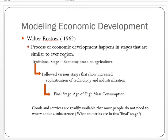In the 1960s, Rostow developed a model of economic development that is written and talked about quite frequently. He proposed that economic development happens in predictable, regular stages that are similar everywhere in the world. A country or region starts in a traditional stage where the economy is based on agriculture and subsistence, then moves through various stages of increasing technological sophistication and industrialization, until reaching the final stage he calls the age of high mass consumption.